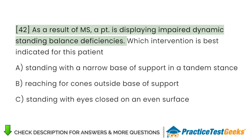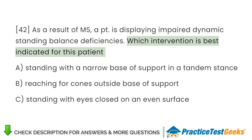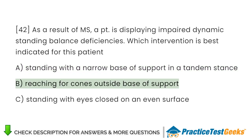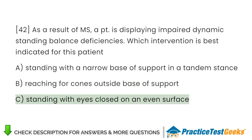As a result of MS, a patient is displaying impaired dynamic standing balance deficiencies. Which intervention is best indicated for this patient? A. Standing with a narrow base of support in a tandem stance. B. Reaching for cones outside the base of support. C. Standing with eyes closed on an even surface.